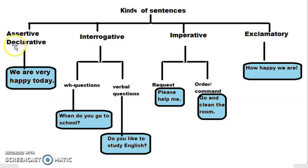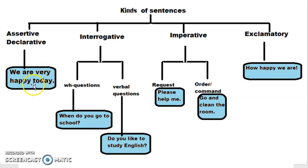Now, assertive sentence — that is declarative sentence. We want to tell something, we want to declare something. For example: 'We are very happy today.' This is our declaration, so this sentence is an assertive or declarative sentence.